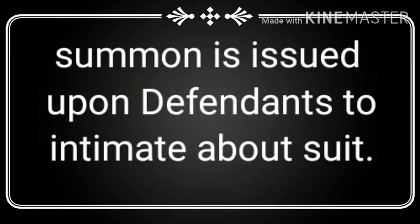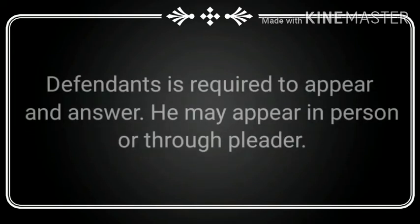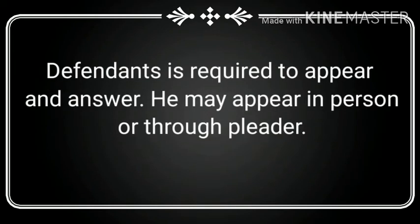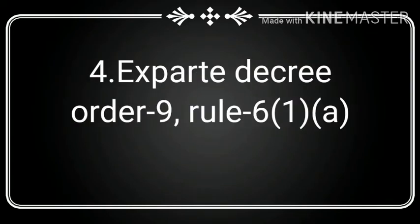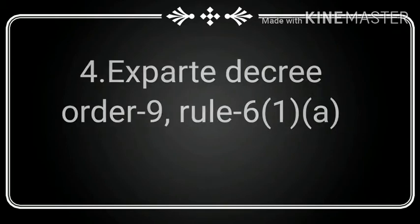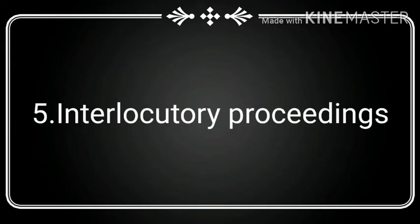Number two: service of summons. Summons is issued upon the defendant to intimate about the suit. Number three: appearance of parties. The defendant is required to appear and answer; he may appear in person or through a pleader. Number four: ex-parte decree. If the defendant does not appear after receiving summons, an ex-parte order may be passed.